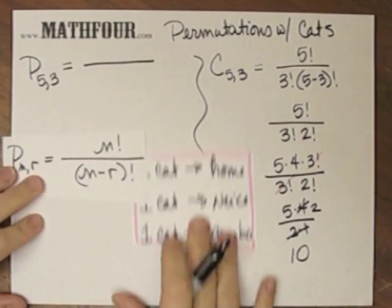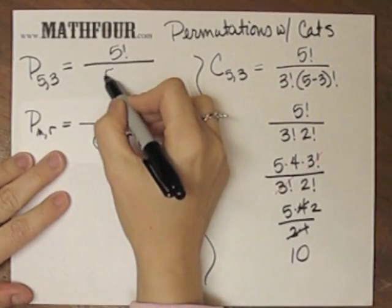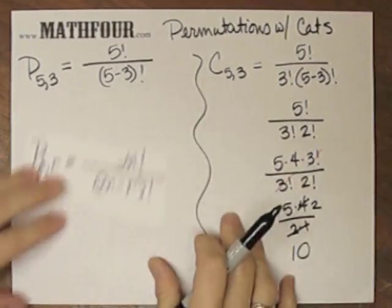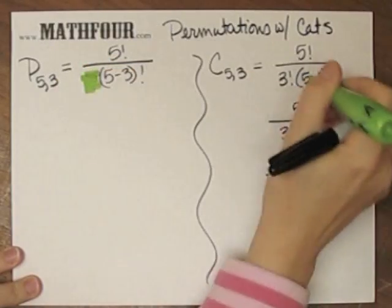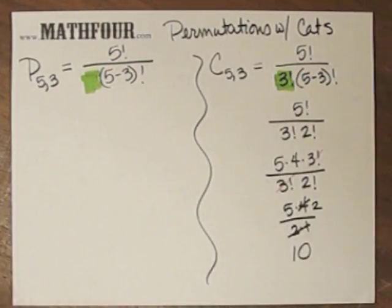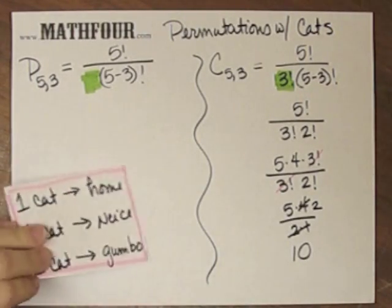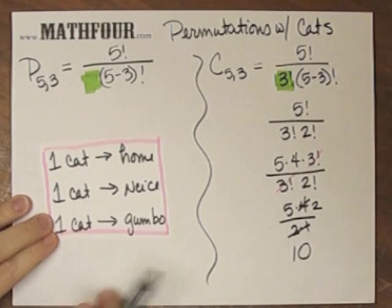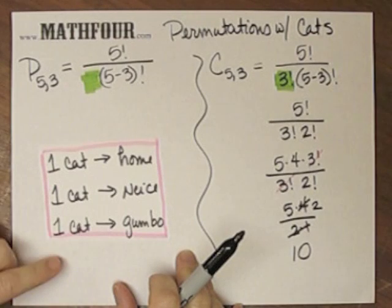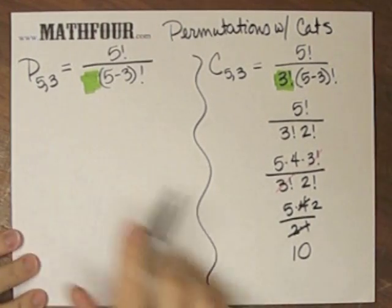We need to use the permutation formula. I have five factorial over five minus three factorial. Notice what's missing from this formula - I do not have this piece. Because I want all the permutations, the different ways to arrange them. If the cat's coming home with me, or getting gumbo made of him, that's a huge difference to the cat, probably to me too. What if I make gumbo out of a really nice cat and bring home a really mean cat?